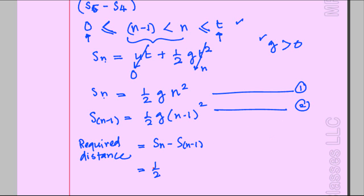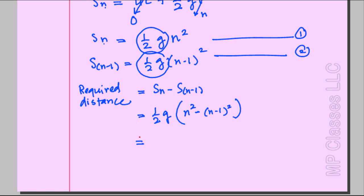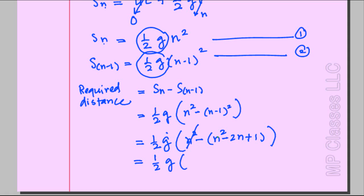The factor ½g is common, so I write ½g times [n² − (n−1)²]. Expanding: ½g times [n² − (n² − 2n + 1)]. The n² terms cancel, the double negative makes +2n, and we are left with ½g(2n − 1). Simplifying further, this equals g(n − ½). I'm now going to the next page.